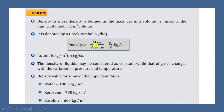Mathematically, density can be represented as mass per unit volume, where mass is represented by small 'm' and volume by capital 'V'. The unit of mass is kg and the unit of volume is meter cube, so the unit of mass density or density is kg per meter cube.